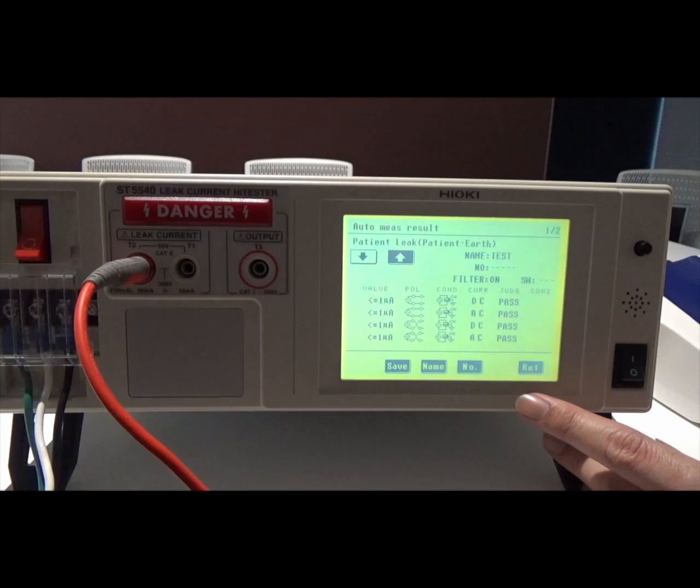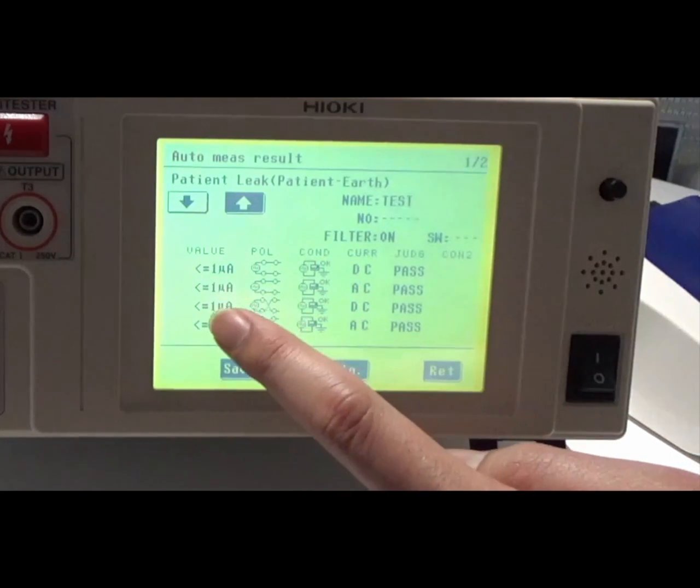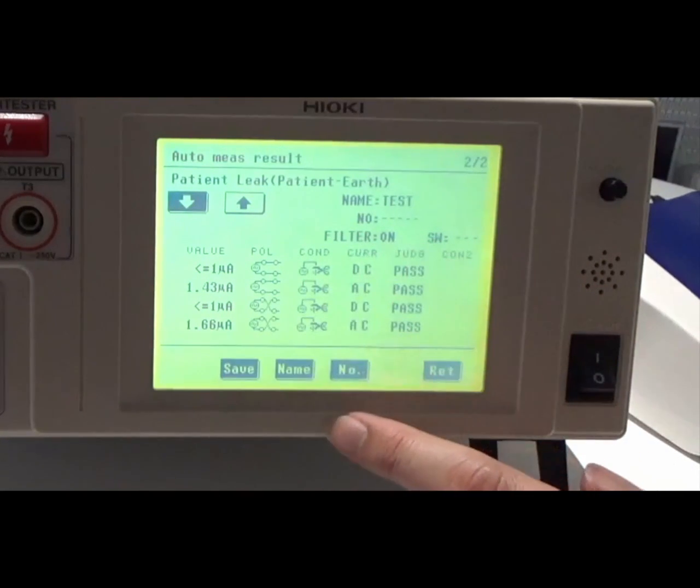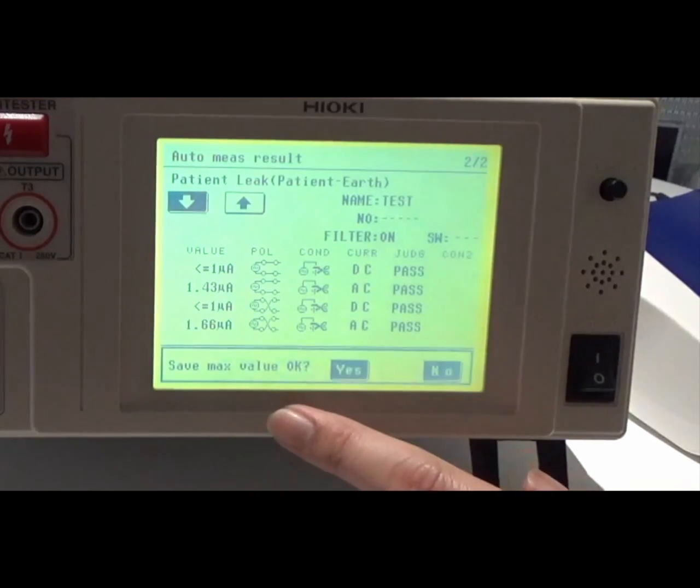When the test is over, the display looks like this screen. The result equal to or under 1 micro ampere shows like this. I go to the next page. The values are shown for results over 1 micro ampere. The data is saved in this tester when the save key is pressed.